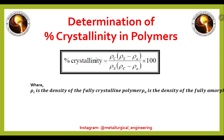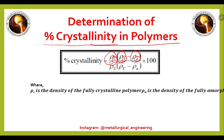Now we will see one more important formula: the formula for percentage crystallinity in polymers. Percentage crystallinity is defined using the density of the crystalline specimen, the density of the actual specimen, and the amorphous density. This formula is used for determining the percentage crystallinity in polymers.